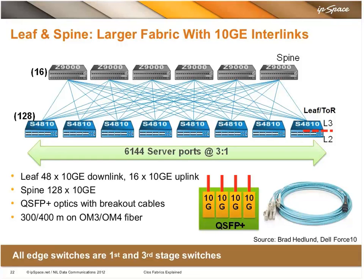We have to look at the port count of the spine switch to determine how wide we can build this Clos fabric. The Dell Force10 Z9000 spine switch has a port count of 128 10-gig ports, which means we can have 128 leaf switches. 128 leaf switches times 48 ports each — that's how we get to 6,144 server ports at 3 to 1 oversubscription.